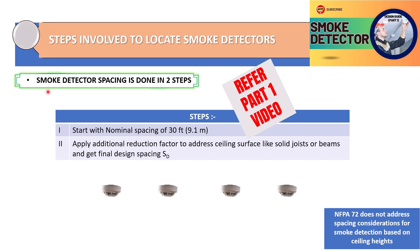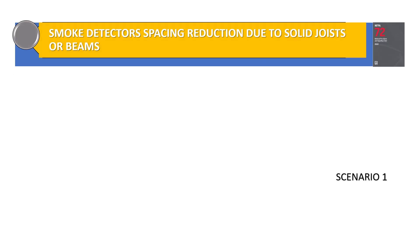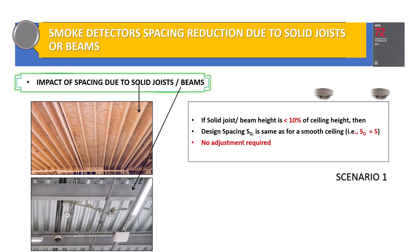Let us have a thorough recap of smoke detector spacing. It has to be done in two steps. Number one would be the nominal spacing, which is 30 feet. However, this nominal spacing has to be reduced — we need to apply a reduction factor based on some scenarios, such as when the ceiling surface has solid joists or beams.